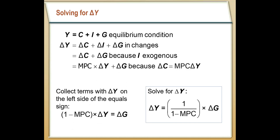Investment is essentially exogenous — it's not really going to move. So the only things that change in response are consumption and government spending. Because consumption is a function of income, consumption is going to go up by the marginal propensity to consume times the increase in income. So the total increase in income is going to be ΔG plus the MPC times that increase in income. We can simply solve for ΔY: the total increase in income equals one over one minus MPC times the change in government spending.